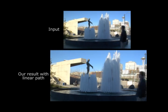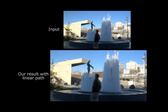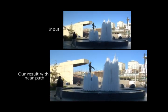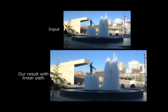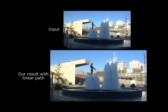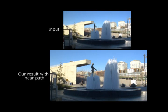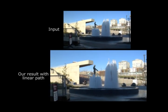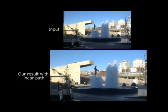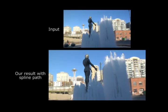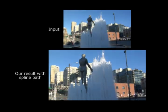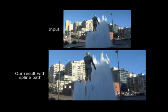Next, we show three examples that go beyond low-pass filtering and instead fit canonical motion paths to the input. In this sped-up example, we fit a perfectly linear motion. And in this example, we fit a spline motion path.